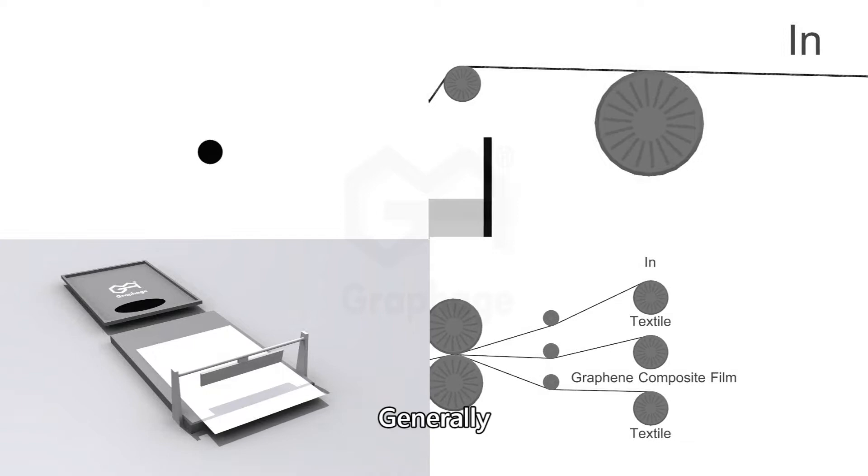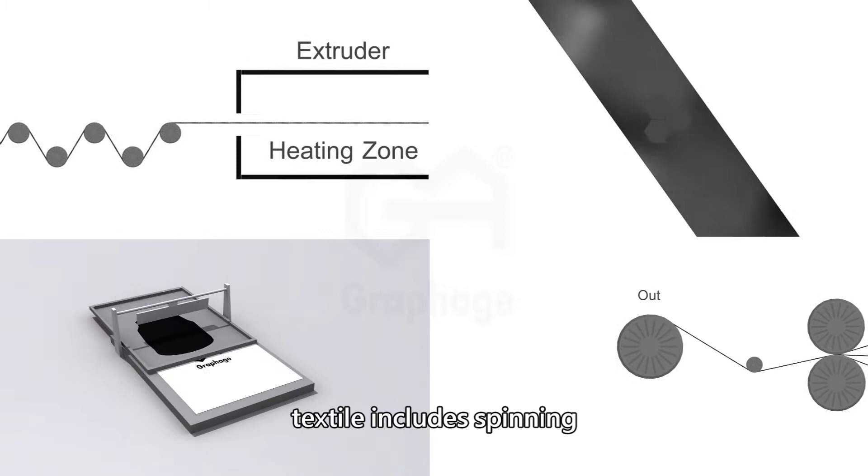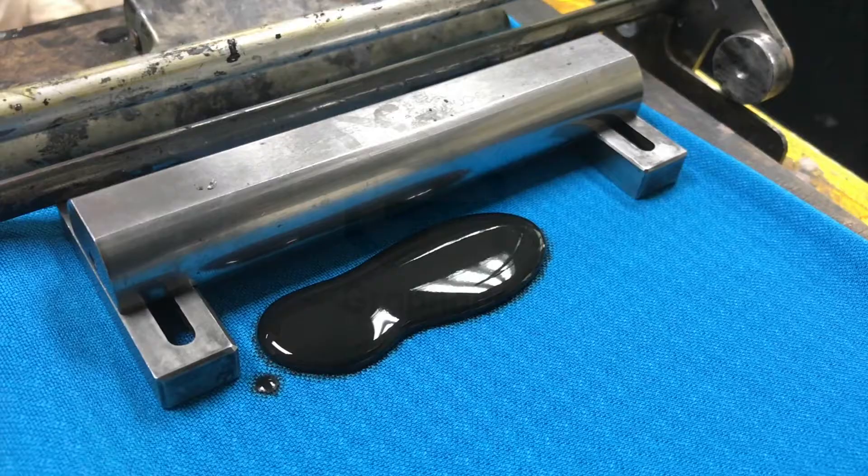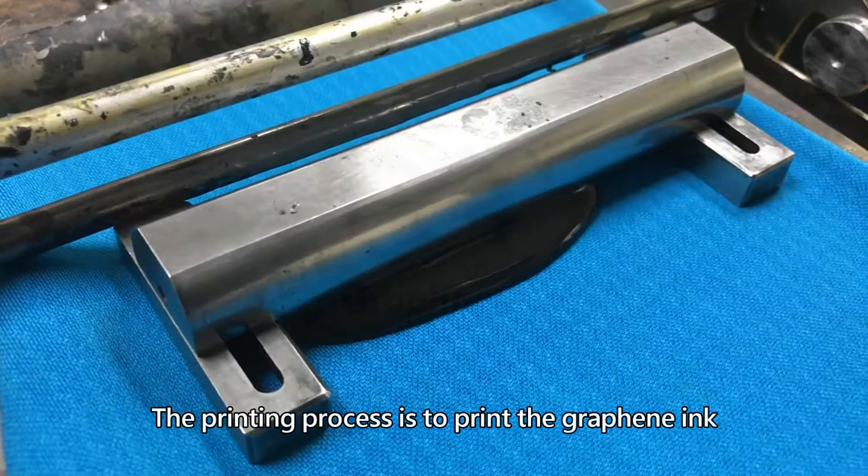Generally, the way to introduce graphene into textile includes spinning, dipping, printing, and laminating.